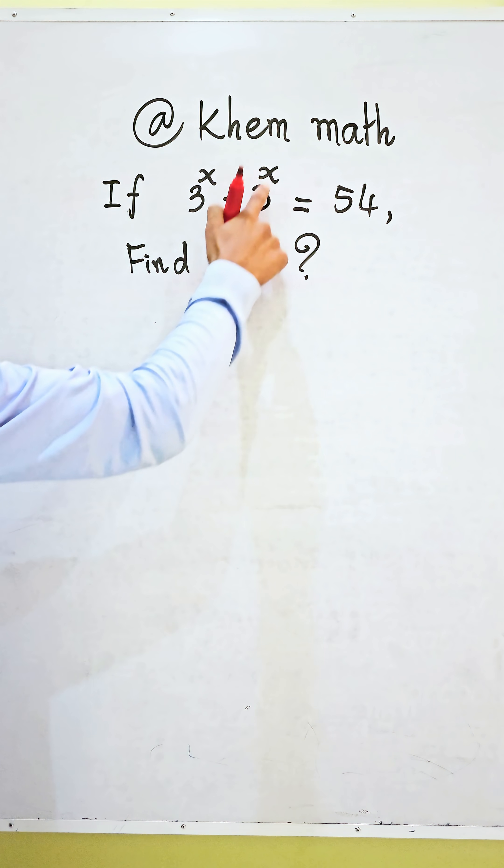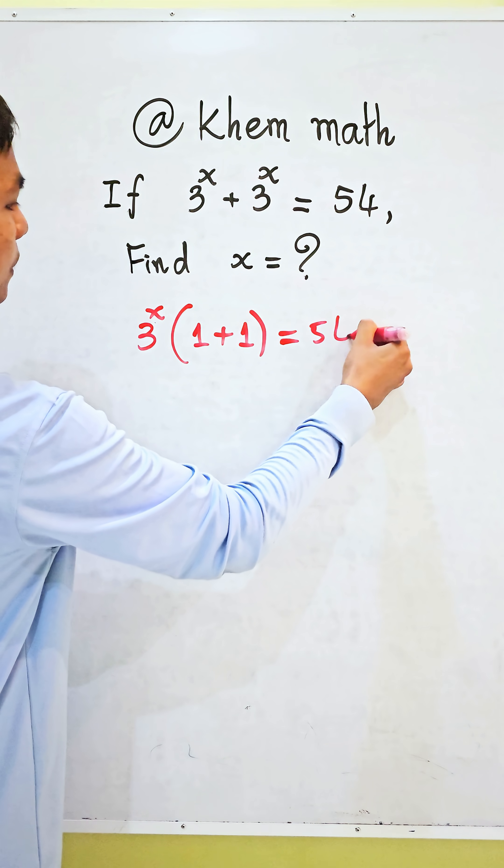This has 3 power of x plus 3 power of x. So we get 3 power of x as the common factor. We get 1 plus 1 here. So if you multiply in, we get 3 power of x plus 3 power of x equals 54.